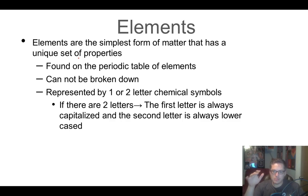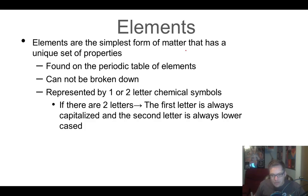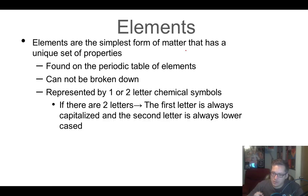Elements are the simplest form of matter that has a unique set of properties. Every single box on the periodic table — whether it be oxygen, hydrogen, nitrogen, or lead — they all have their own unique properties. If we take a carbon atom and split it in half, it's no longer carbon and no longer has the same properties. But if you had a chunk of carbon and split it into two pieces, each piece would have the same exact properties. So when we say elements cannot be broken down, we mean that's the smallest chunk of matter that still has the same properties as the bigger chunks.